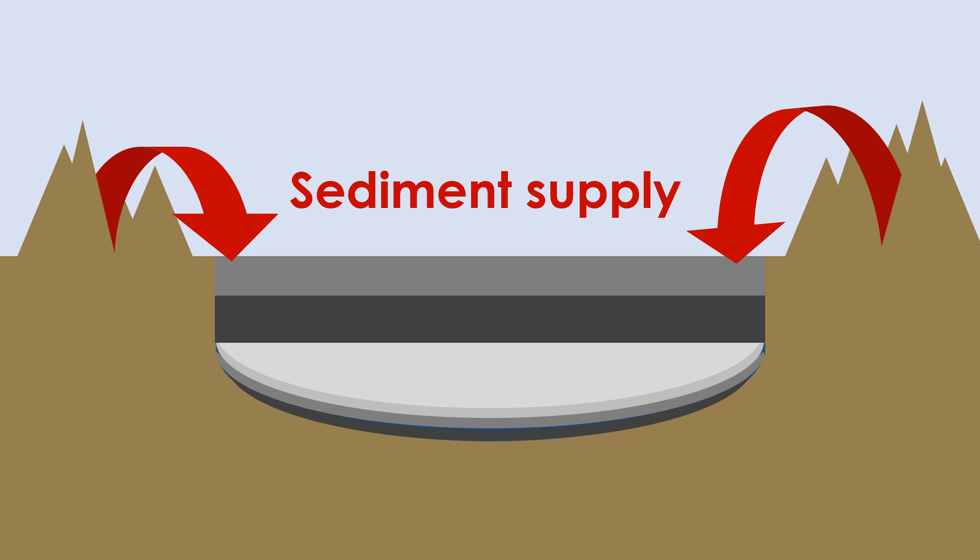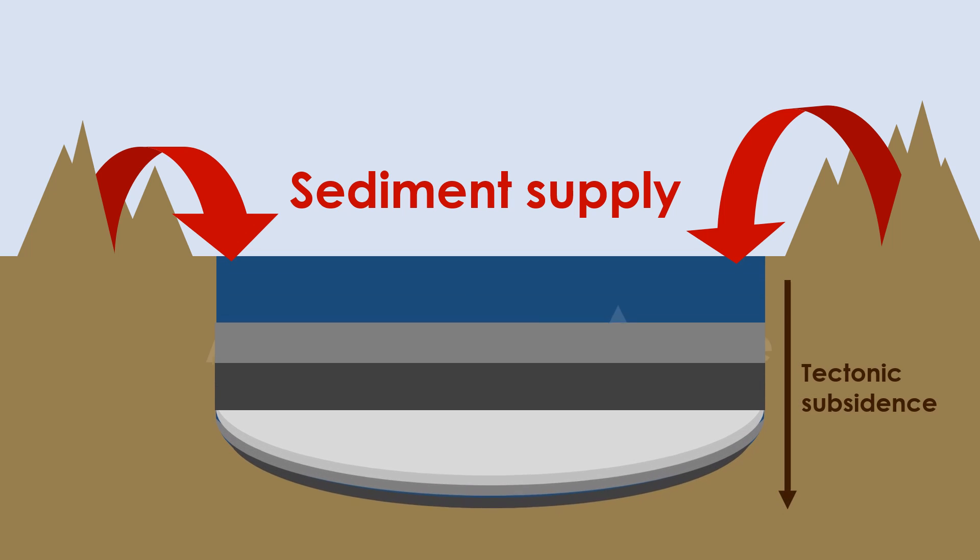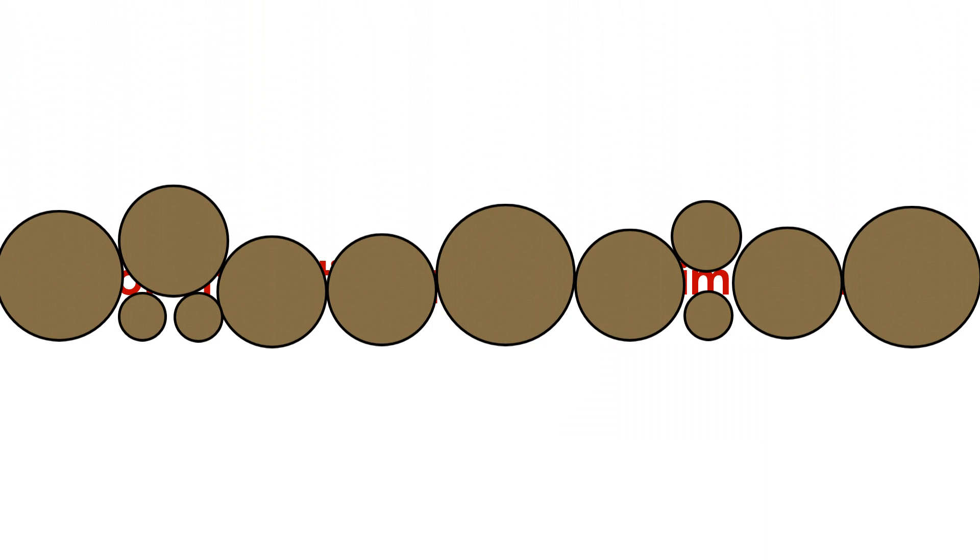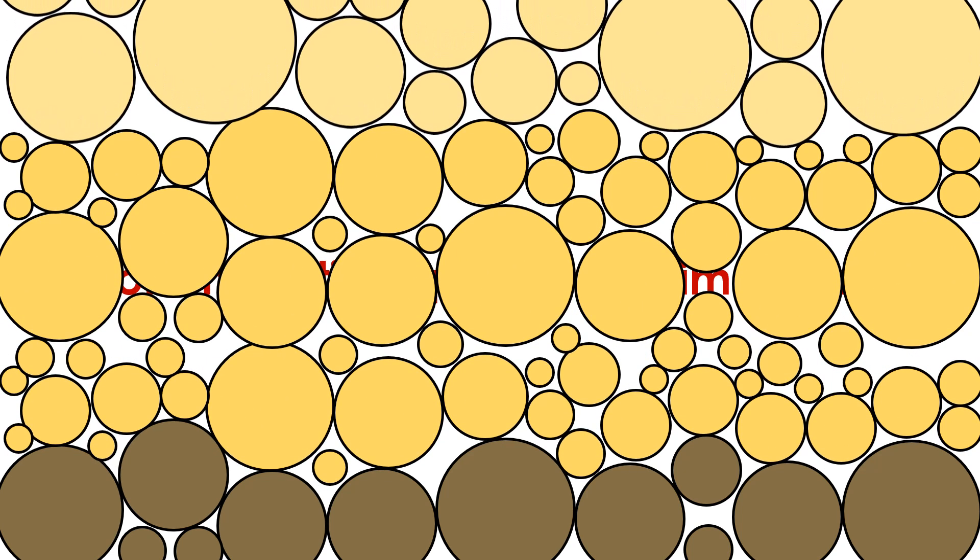Naturally, basins can fill over time and stop being areas of deposition. Indeed, they only remain active basins as long as there are geologic processes creating and maintaining a certain amount of accommodation space. The accommodation space is the space available for potential sediment accumulation. As long as the amount of accommodation space is greater than the volume of sediment supply, the basin will continue to receive and accumulate sediment.